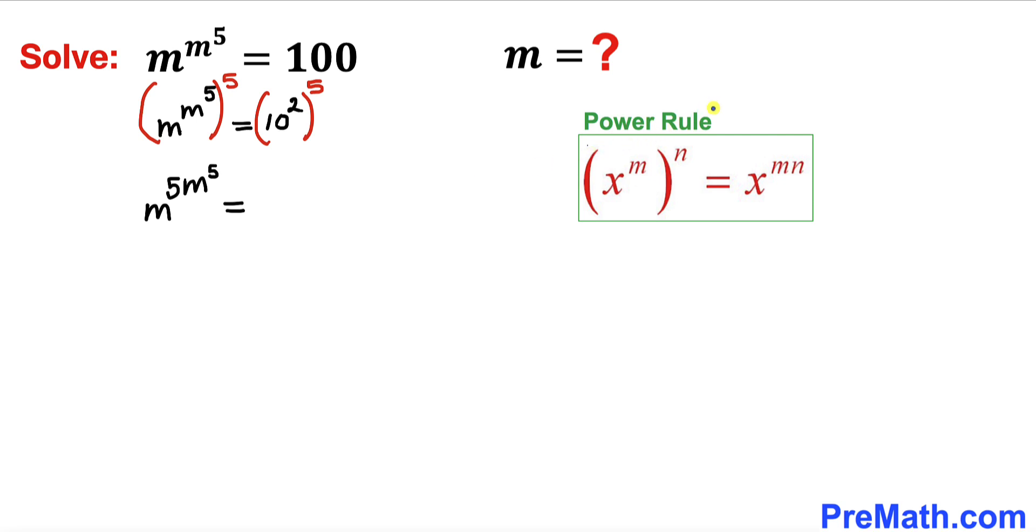And now we are going to apply this power rule on the right-hand side as well. So we are going to multiply out 2 times 5. That is going to give us 10. So the right-hand side could be written as 10 to the power of 10.